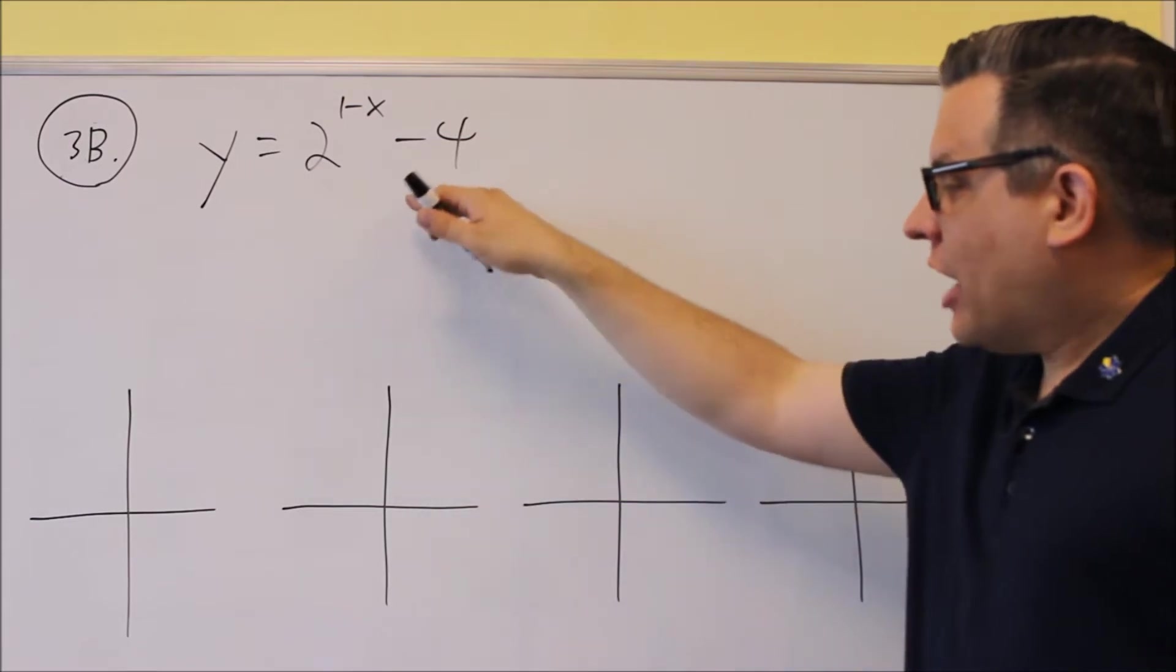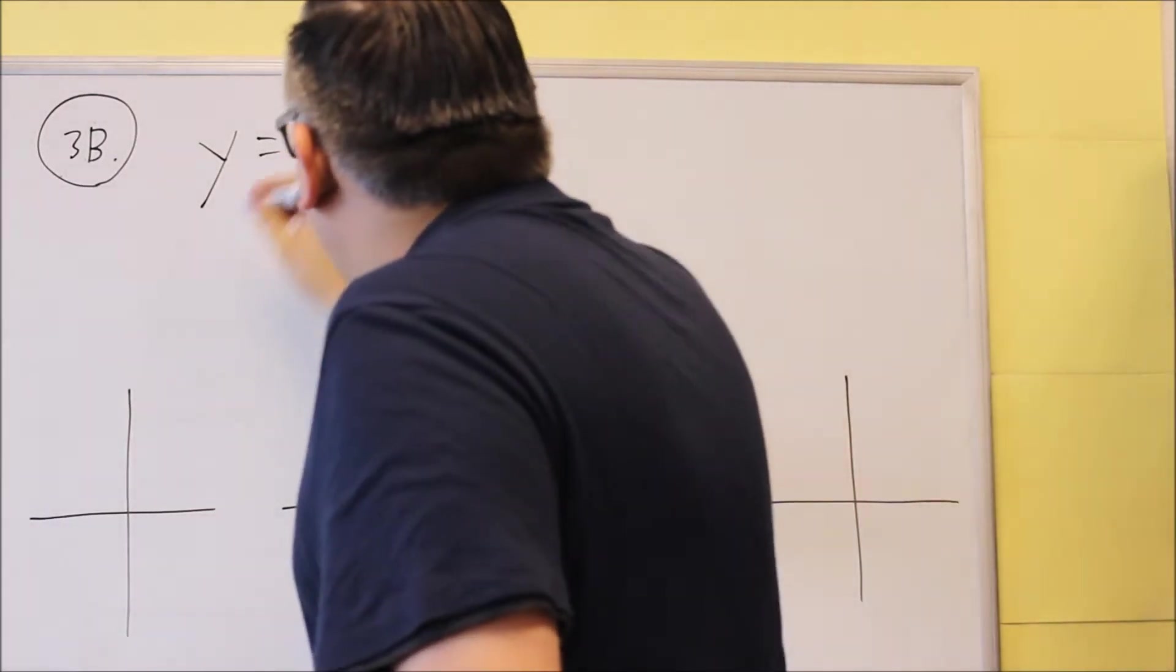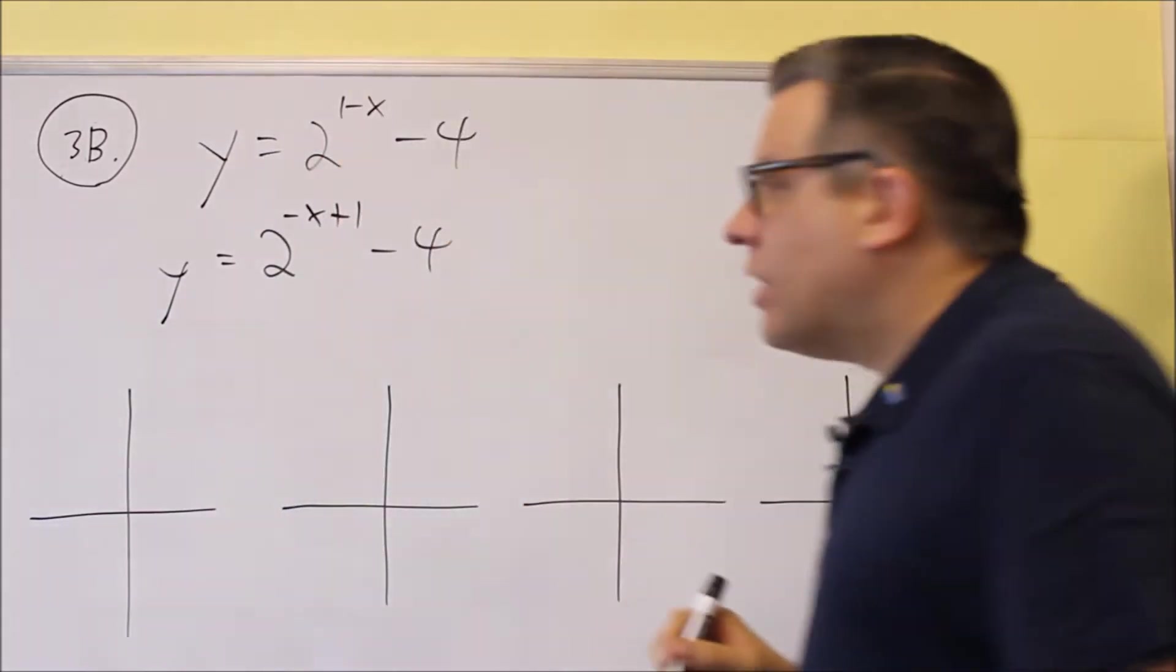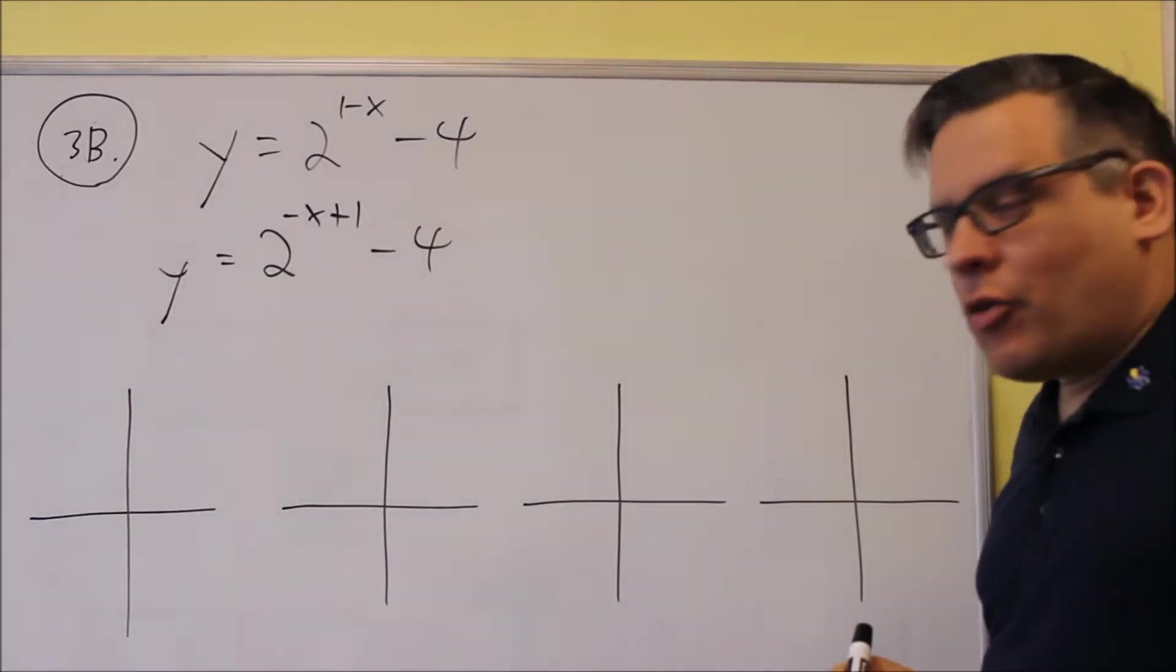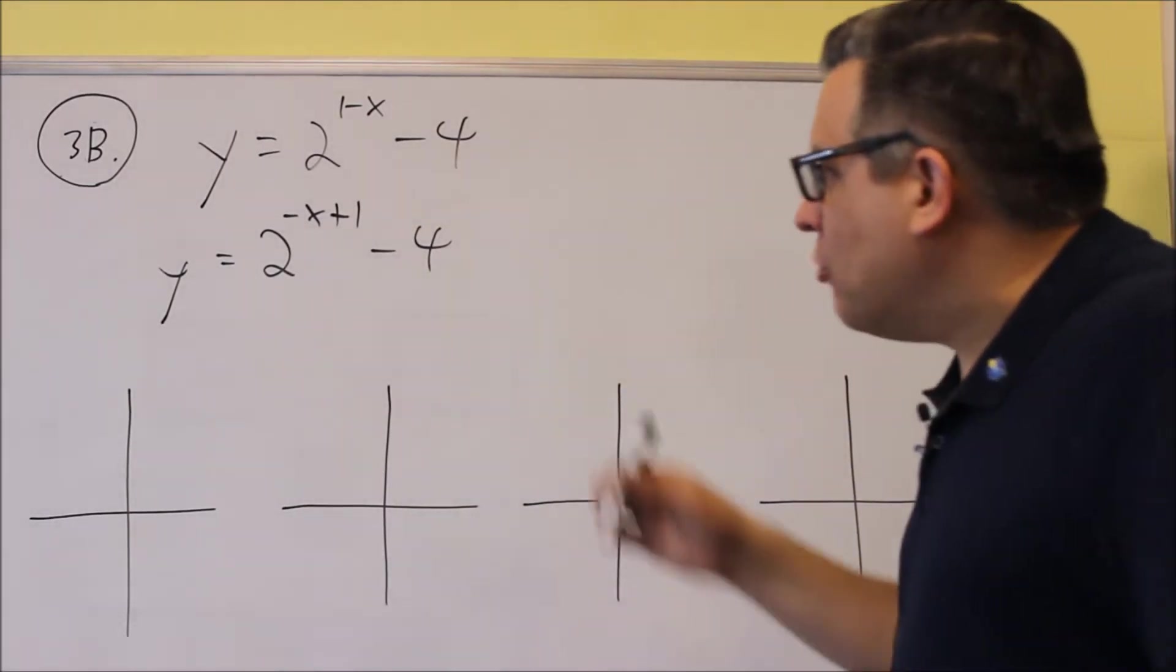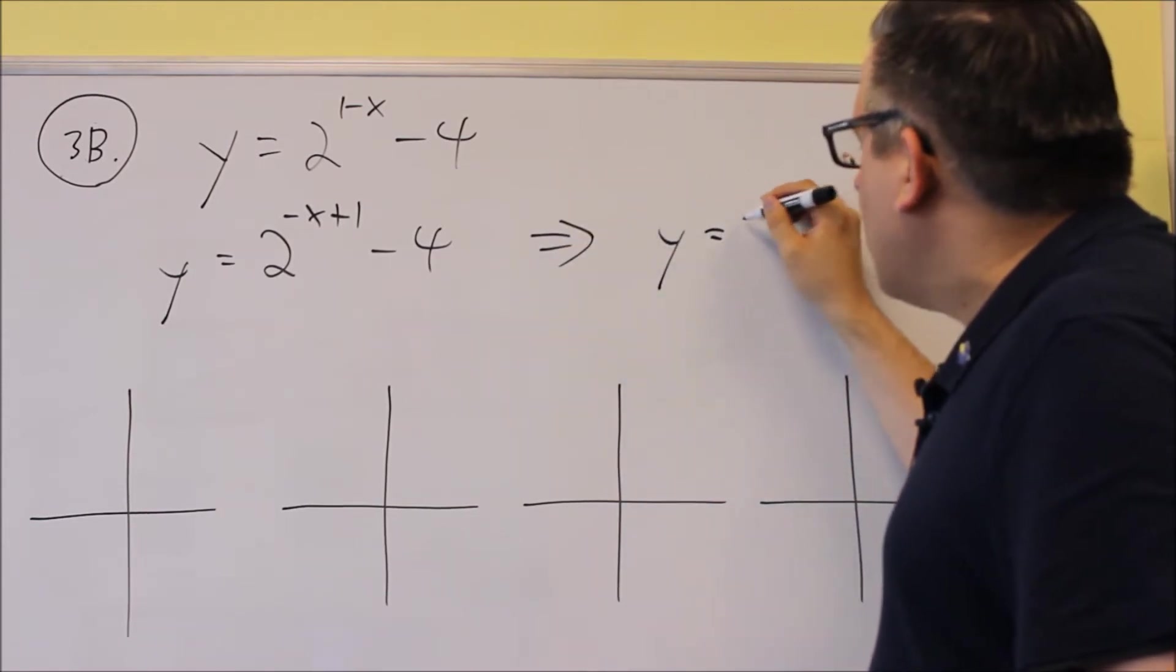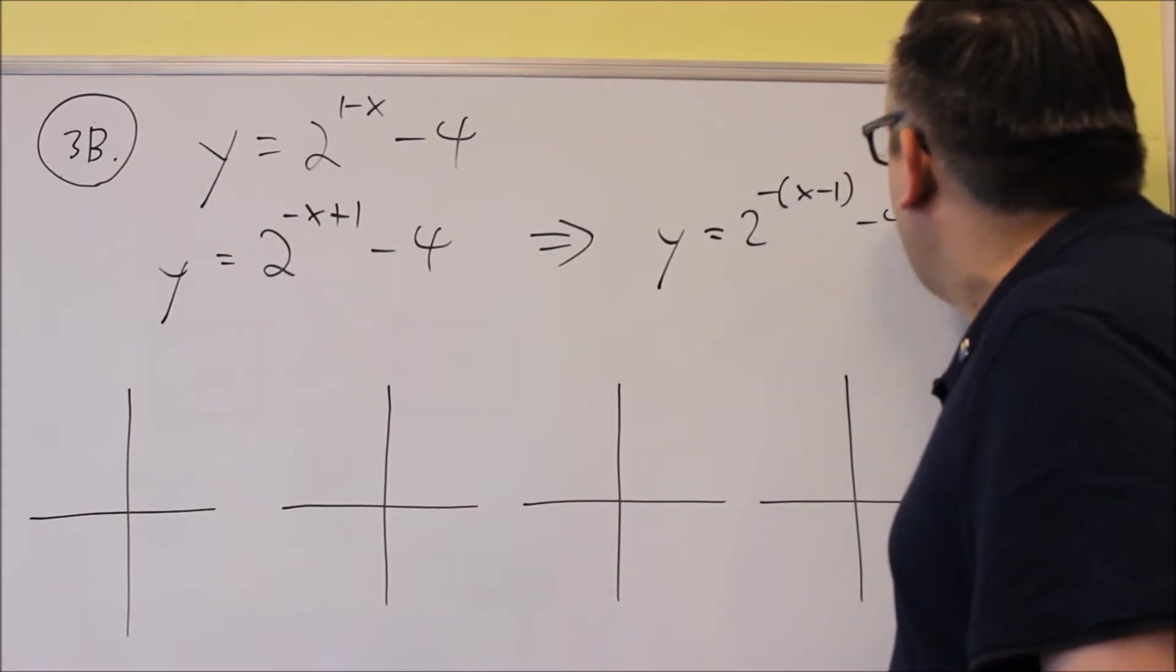So first thing is we have to, for this one, switch the order around. So what I'm going to do first is write this as negative x plus 1. So switch the order for that one. But also, the x has to be positive, so that way I move it in the correct direction. So what I'll do after that is I'm going to do y equals 2. I'm going to factor out a negative, and I get x minus 1 minus 4.